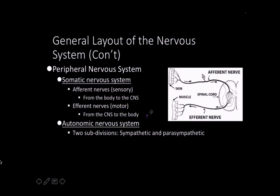With the autonomic nervous system, you have involuntary muscle contraction, and the sympathetic and parasympathetic divisions play a role not only in muscle contraction but in other types of activities and physiological mechanisms we're about to discuss.